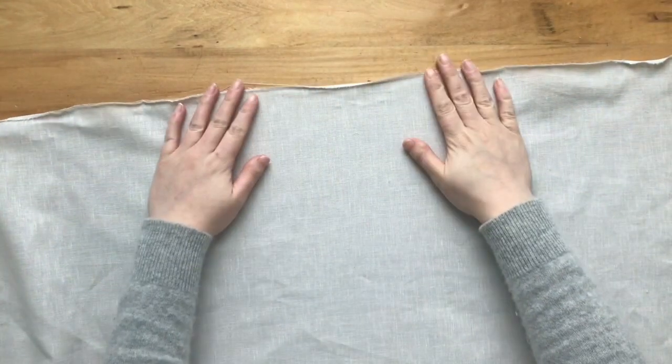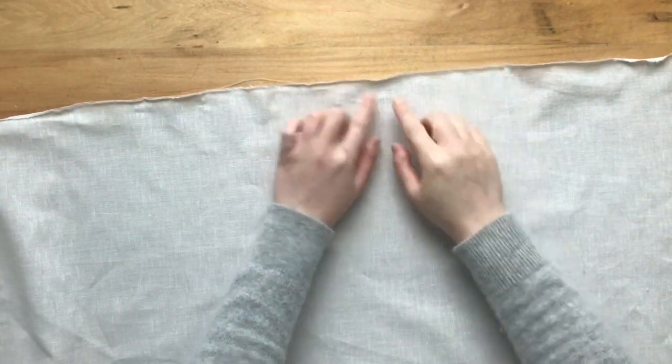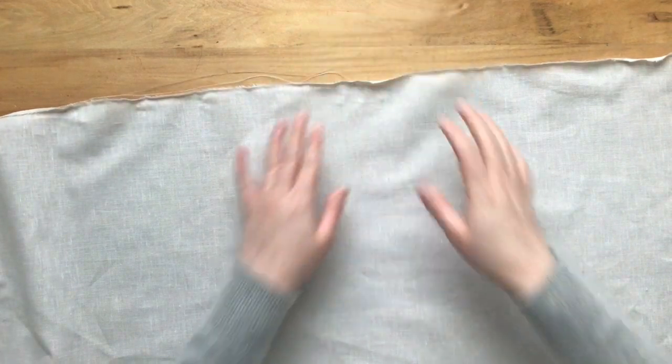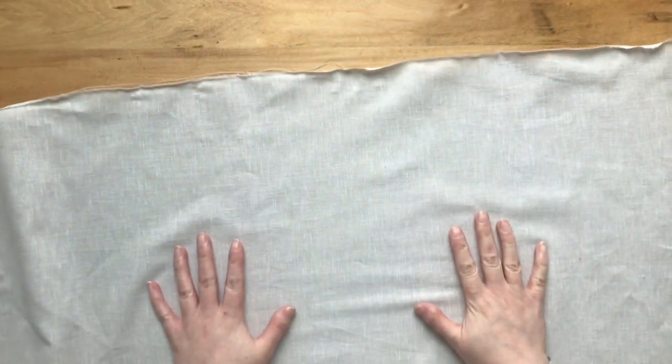Now I'm going to take my fabric over to my ironing board, press my edges flat, clean them up a little bit, pull these loose threads, and then apply my shapes.